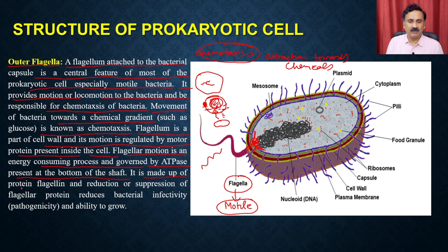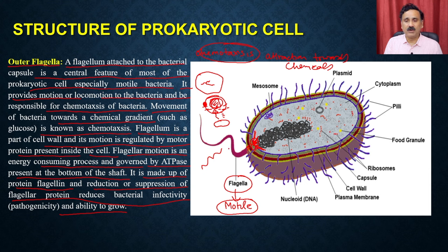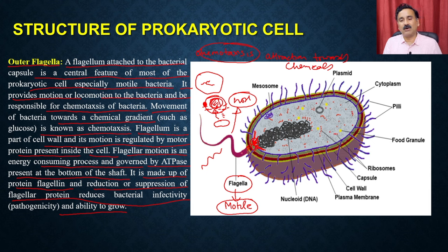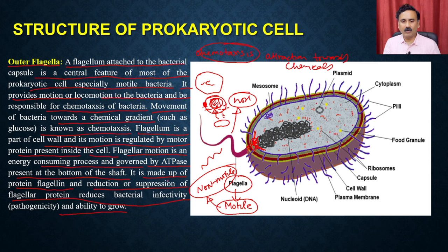Flagellum is made up of a protein called flagellin. The reduction or separation of the flagellar protein reduces the bacterial infectivity and ability to grow. Some bacteria also use the flagellum to access different types of hosts. If you reduce the production of flagellum protein and compromise the flagellar movement, you make the bacteria non-motile and the bacteria will lose its ability to infect and will not cause disease.